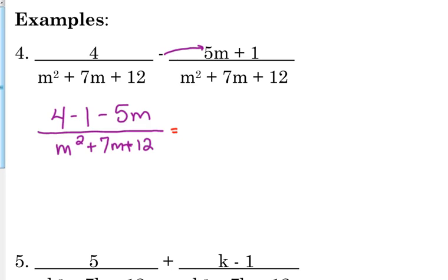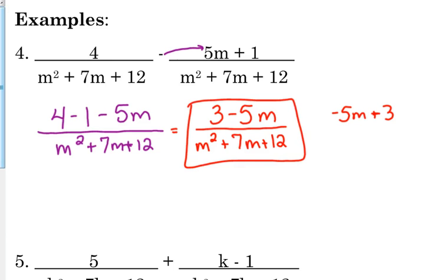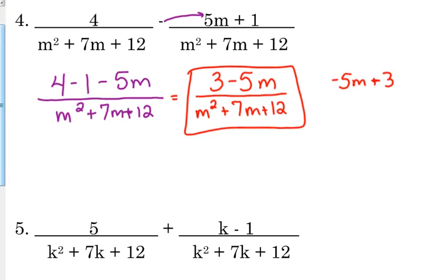So 4 minus 1 is 3 minus 5m. Yes, we usually always write the variable expression first, but in this case, kind of like the last one, so that I don't have to write multiple signs there, I'm just going to leave it as 3 minus 5m. If that really bothers me, if you want to write negative 5m plus 3, that is fine. Those are the same thing. No big deal if you feel more comfortable with that. But you will probably see this as a major choice, if it were multiple choice.